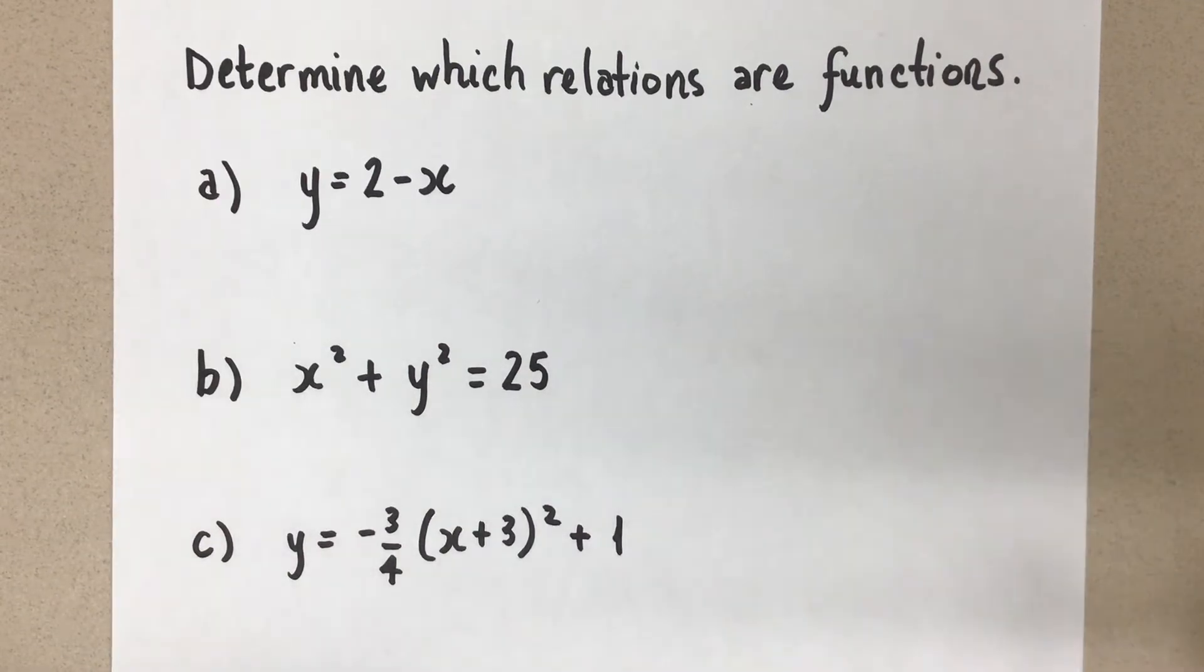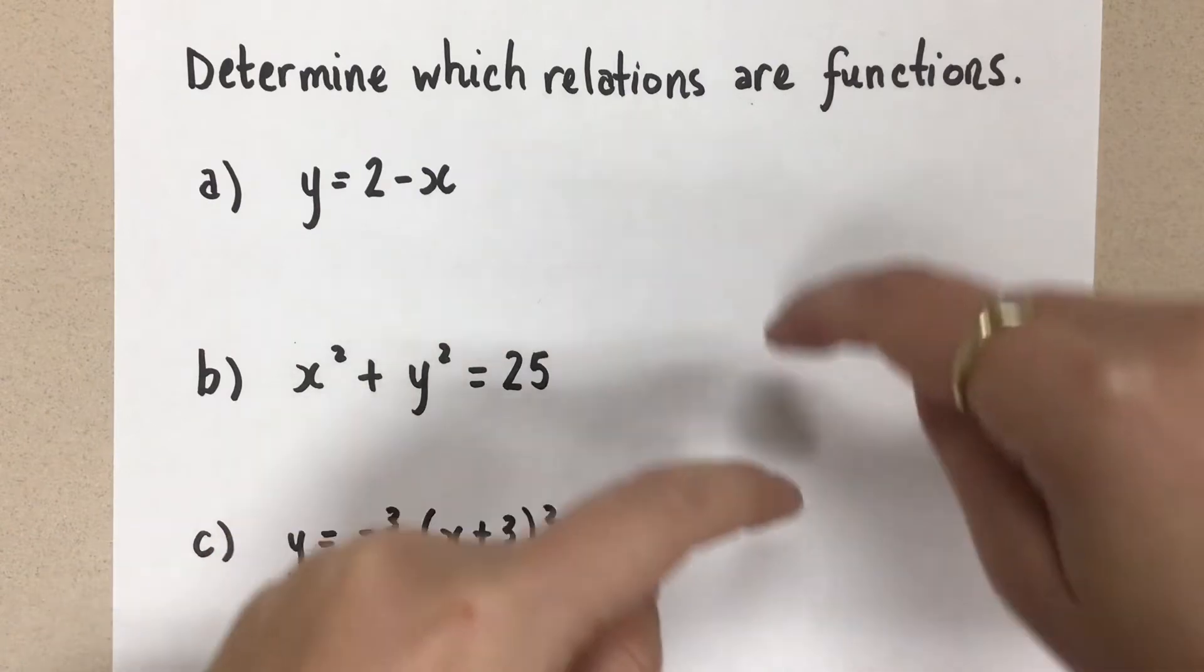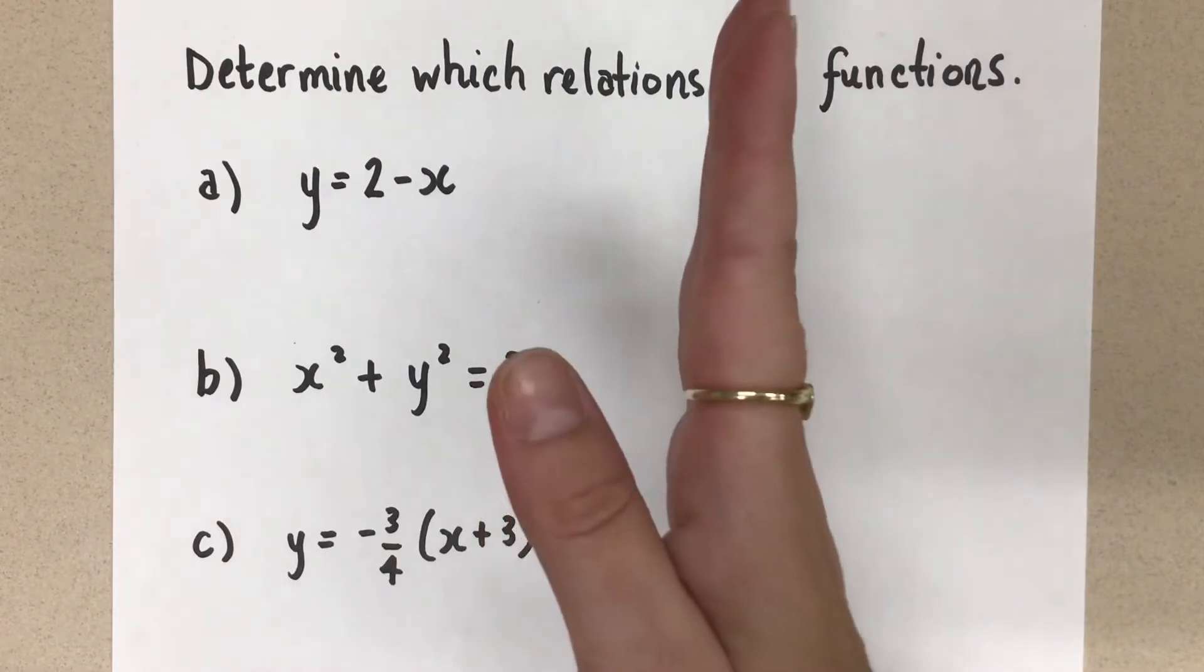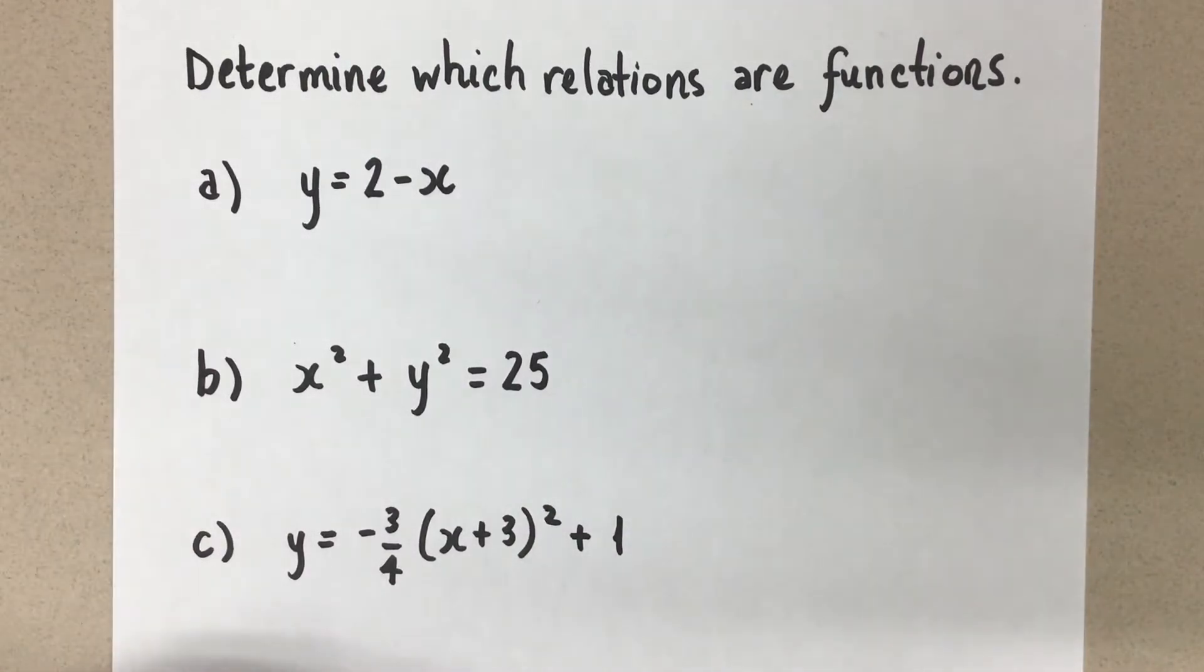So let's first review what it means to be a function. A function means that every x input, x value, has only one y value. So every input has only one output. We don't want on a graph to see two points vertically on top of each other, like in a vertical line, because that would make it not a function. And with saying that, sometimes we say that the test for a function is the vertical line test, which means if you imagine an invisible vertical line on your graph, is there ever a time that that vertical line goes through your graph or relation more than once? And if it does, then it fails the vertical line test and it is not a function.